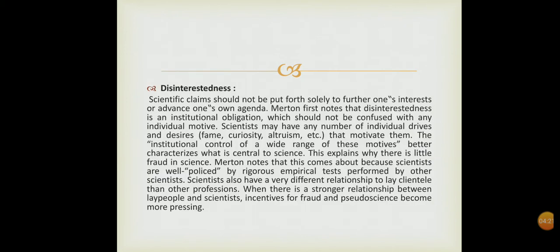The next important norm of science is Disinterestedness. According to this norm, the scientist should be free from self-interest in their professional roles. Scientists are expected to act in the best interest of science. The scientist is not supposed to allow the desire for personal gain to influence the reporting and evaluation of results. Scientific claims should not be put forth solely to further one's interest or advance one's own agenda.